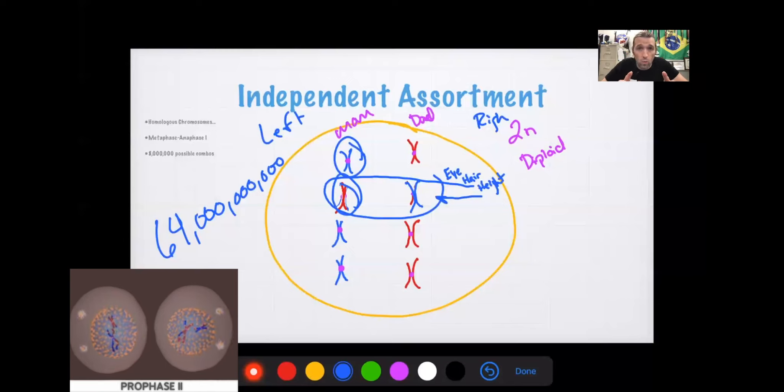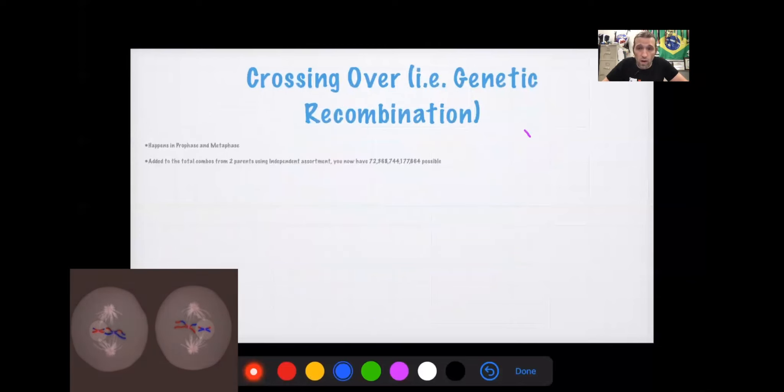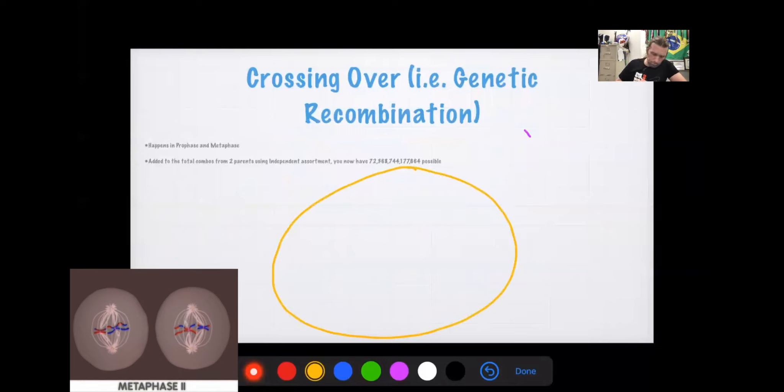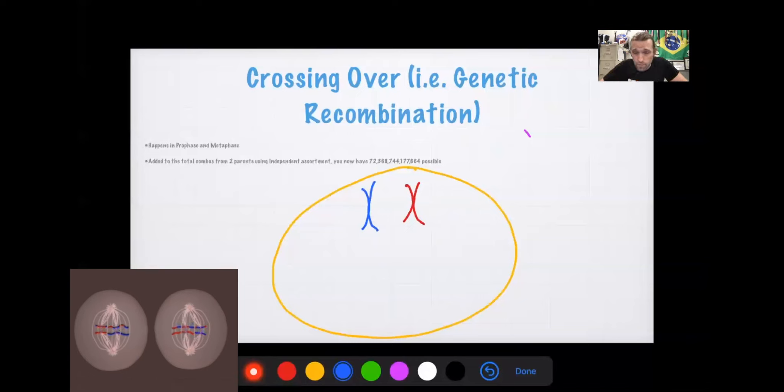Now, we add another layer of variation or complexity with the other step, which is crossing over. Now, with crossing over, there's my cell again. Here's dad's DNA, and here's mom's DNA, and there are chromosomes here. This only occurs in meiosis I, and this happens between prophase and metaphase, as they start to align up at the middle.